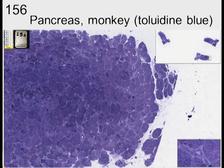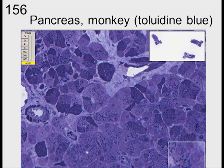Here we see the pancreas of a monkey with toluidine blue. If you go to a higher magnification, you can see that the secretory granules near the apex, near the lumen, are very dark and dense. With toluidine blue, you look for the size and the density of things — dense things are very dark. In contrast, you see the nuclei are not that dark, and you see the connective tissue around there. And if you've got a keen eye, you might be able to see some ducts.